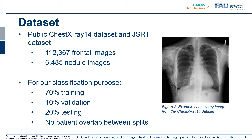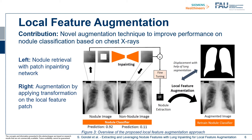In this slide, we explain local feature augmentation, our proposed augmentation technique, to improve the performance on nodule classification based on chest X-ray images. The whole pipeline can be split into two parts. On the left-hand side, we see the nodule retrieval, which works with a patch in-painting network. Several nodule patches are necessary, extracted out of the nodule images.